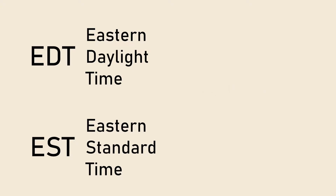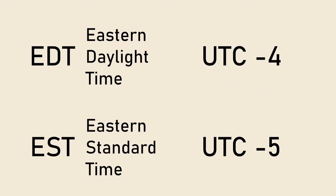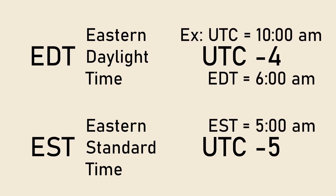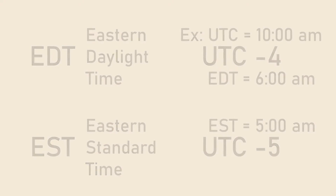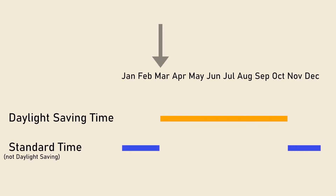Looking at both time zones in comparison to UTC, Coordinated Universal Time, reveals that they're actually completely different. The hint is actually in the names Daylight and Standard. Daylight Saving Time is ahead of Standard Time by one hour, and is used from the second Sunday in March to the first Sunday in November.